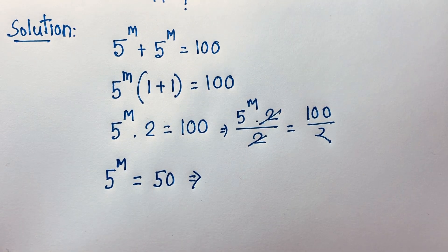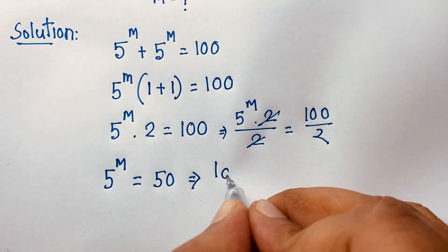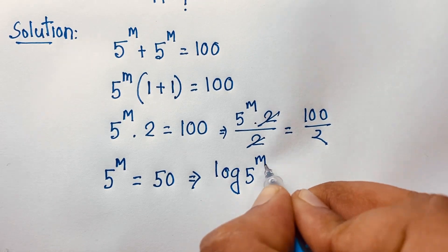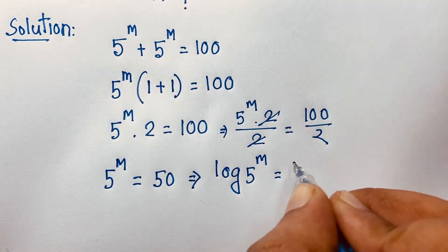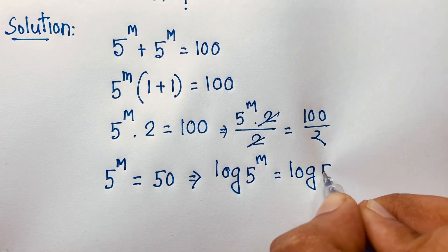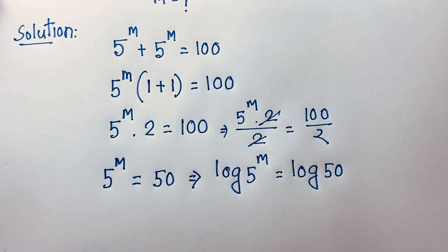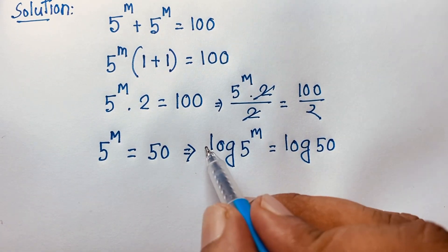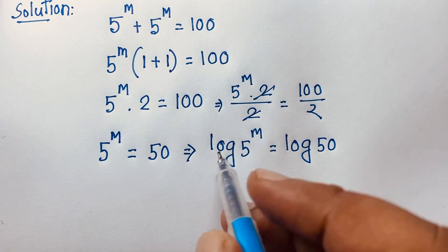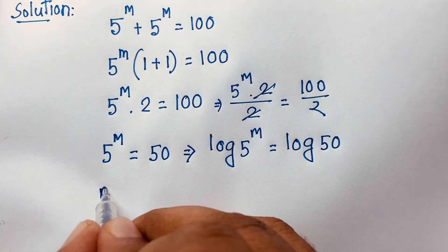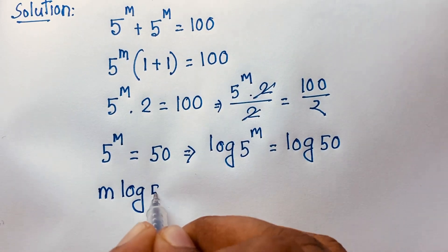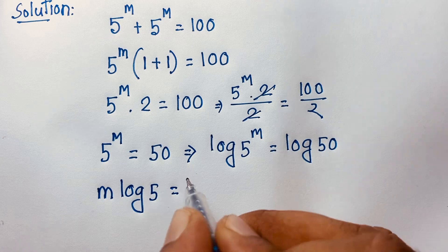Now I apply log to both sides. So log 5 to the power of m is equal to log 50. According to logarithm rules, the m moves in front, so it will be m log 5 is equal to log 50.